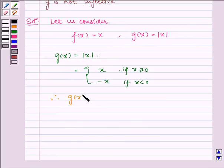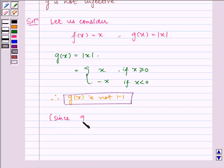Therefore, g(x) is not one-to-one. Since g(1) equals g(-1) equals 1, but 1 is not equal to minus 1.